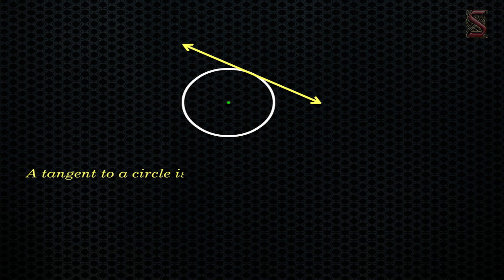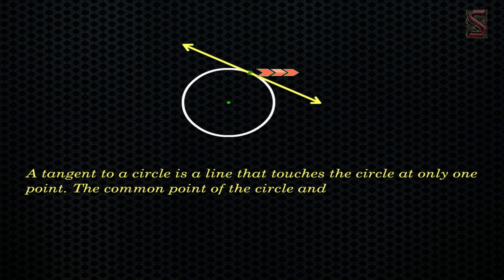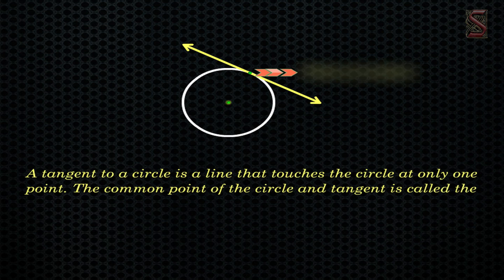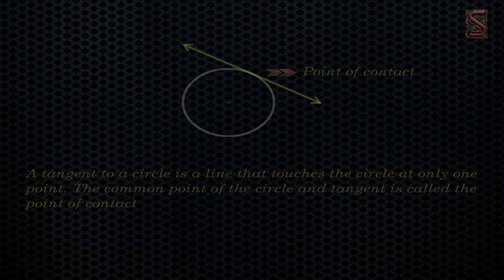In this case the line is called a tangent to the circle. A tangent to a circle is a line that touches the circle at only one point. The common point of the circle and the tangent is called the point of contact. Let us do an activity to understand the presence of a tangent to a circle.